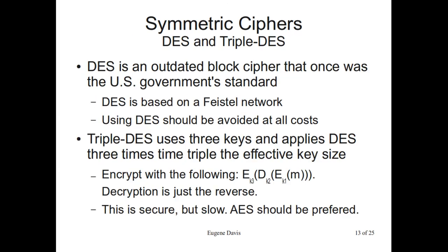A couple of algorithms quickly. DES is outdated — don't use it. It's based on Feistel. Triple DES applies three different keys and applies DES three times using each of those key sizes. This expands the key size from its original 56-bit key. It's based on 64-bit block sizes. It expands the 56-bit key to approximately 128-bit equivalent — about the equivalent of 128-bit AES. However, it's really slow under most conditions. The only time you should use Triple DES is if you're on a legacy system where it has hardware support for DES, in which case it may be faster than AES.